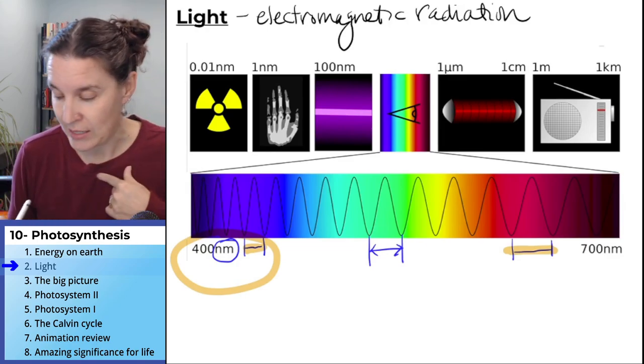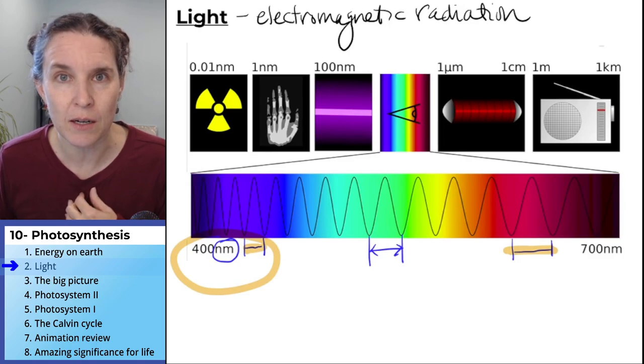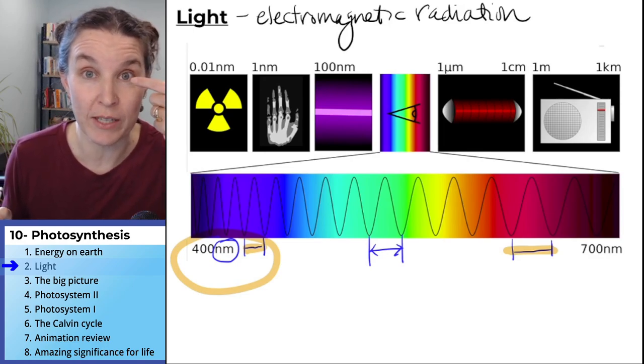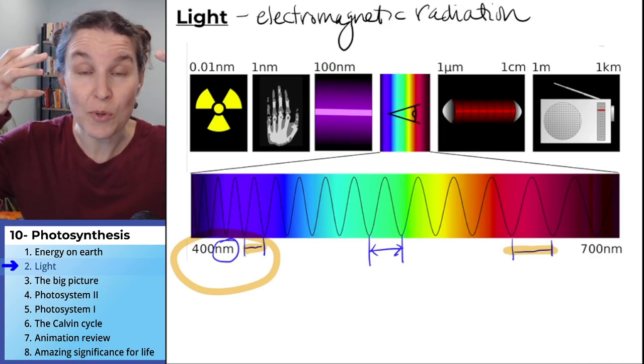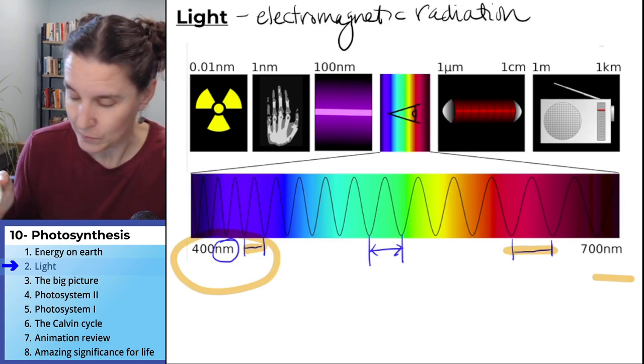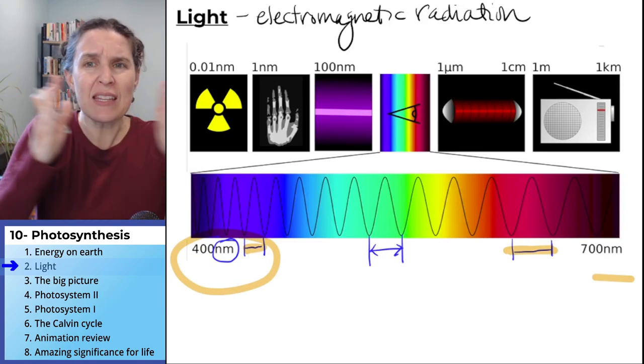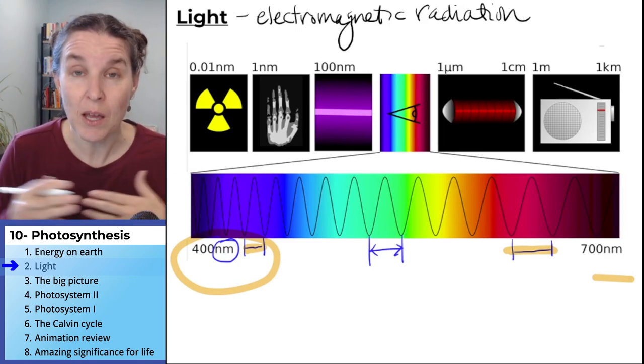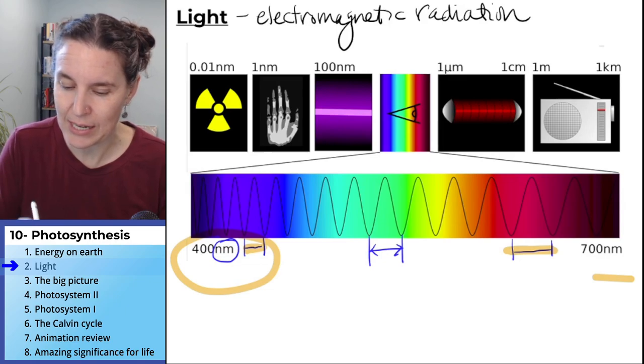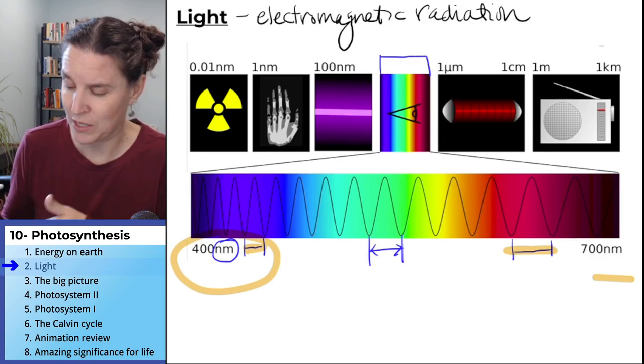If on the other hand it is 300 billionths of a meter bigger than 400 nanometers and it is instead 700 nanometers and that wavelength of light hits your eye, you're going to perceive red. The wavelength that you see determines the color that you see. Now in the electromagnetic radiation spectrum, we have way more than just visible light. So visible light is just a small portion from 400 nanometers to 700 nanometers.